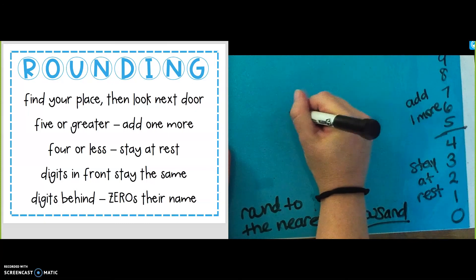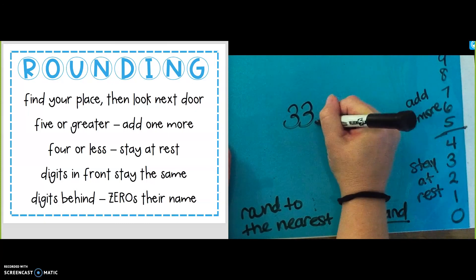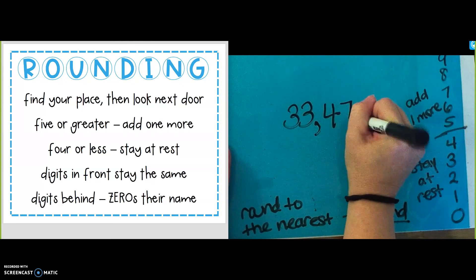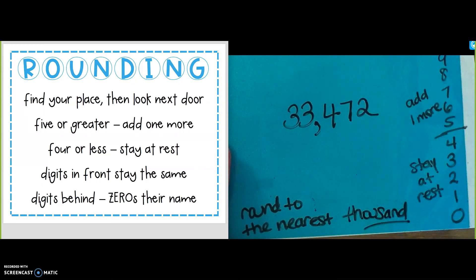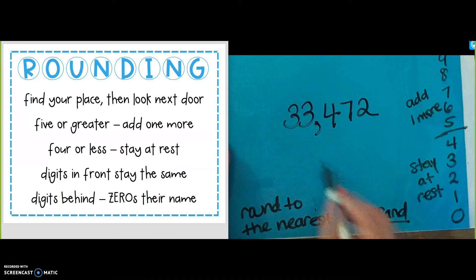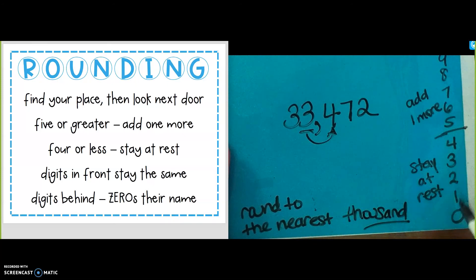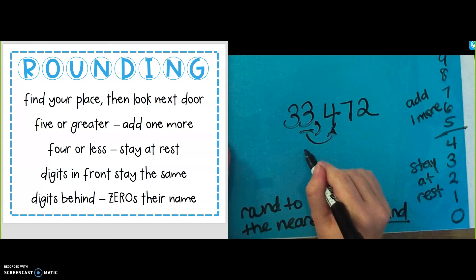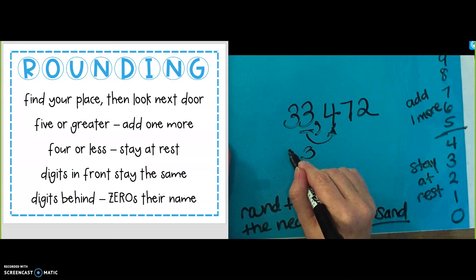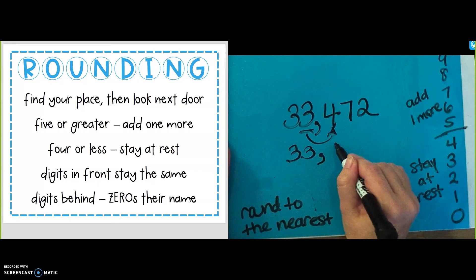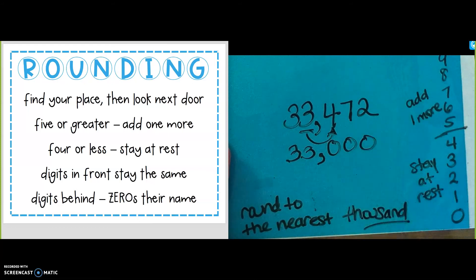One more. The number is 33,472. Find your place — my place is the thousands place still. Look next door. There's the 4. 4 or less, stay at rest. I'm going to keep this a 3. Digits in front stay the same. Digits behind — 0 is their name. 33,472 rounded to the nearest thousand is 33,000.